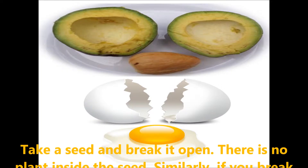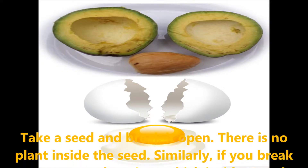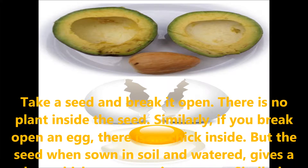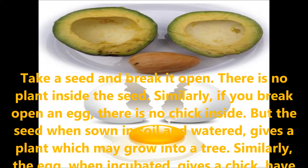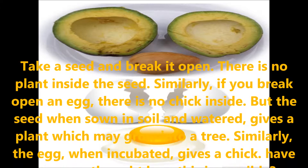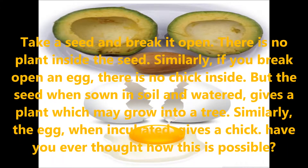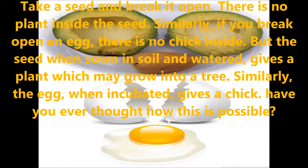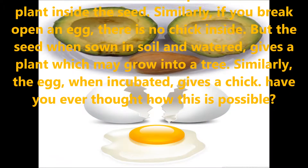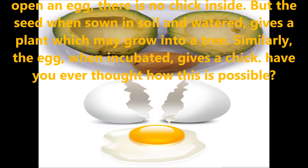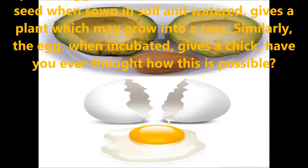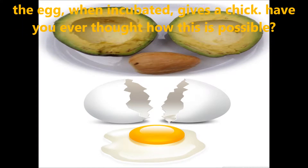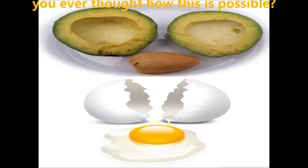Take a seed and break it open — there is no plant inside the seed. Similarly, if you break open an egg there is no chick inside. But the seed, when you sow it in soil and water, gives a plant which grows into a tree. Similarly, the egg when incubated gives a chick. Have you ever thought how this is possible?